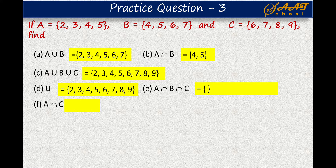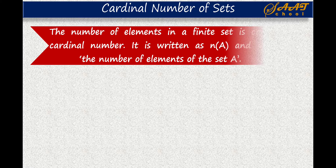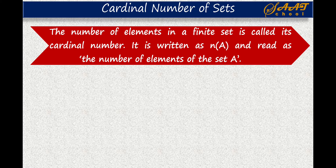Now finally, A intersection C. Here again there are no common elements between set A and set C. So A intersection C is a null set, and you can represent it by the special character phi (∅). Now, the cardinal number of a set is simply the number of elements contained by that set. The number of elements in a finite set is its cardinal number, and it is written as N(A) and read as 'the number of elements of set A.'